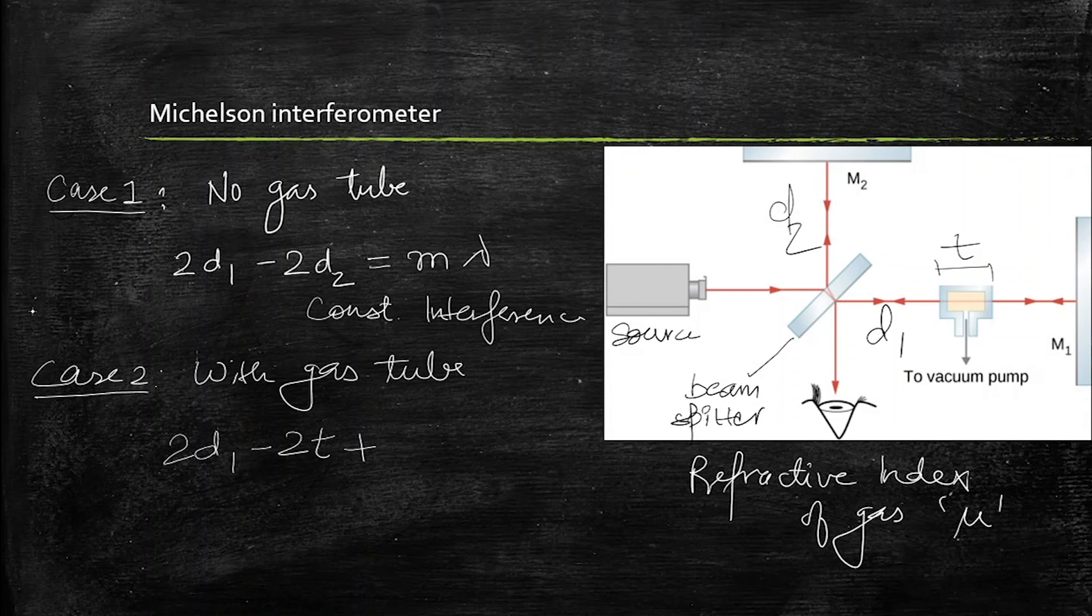So this is the horizontal distance minus the vertical distance, so the vertical path is twice of D2. So this will become N into lambda. Just have to take the difference of these two.